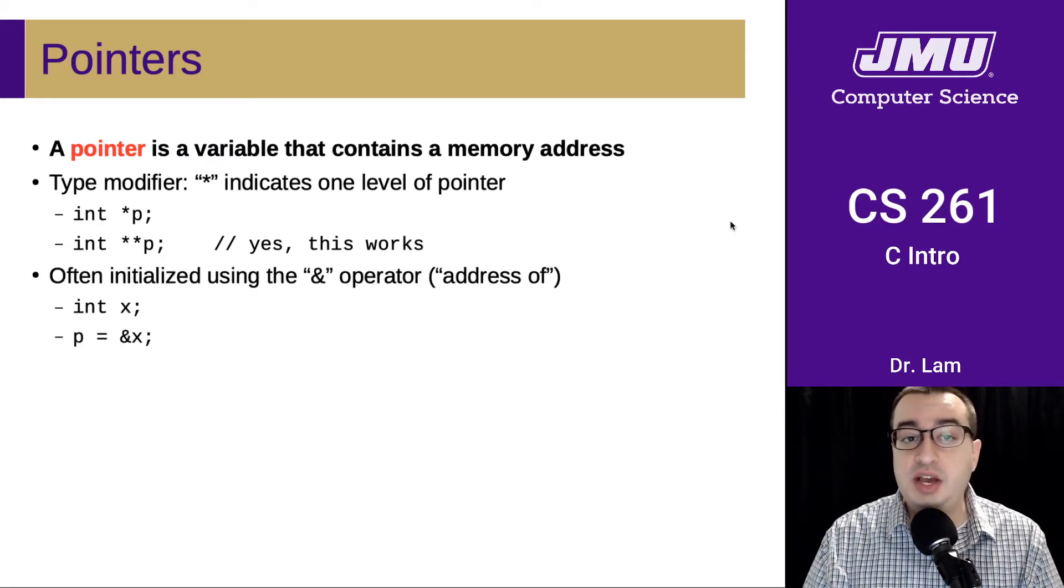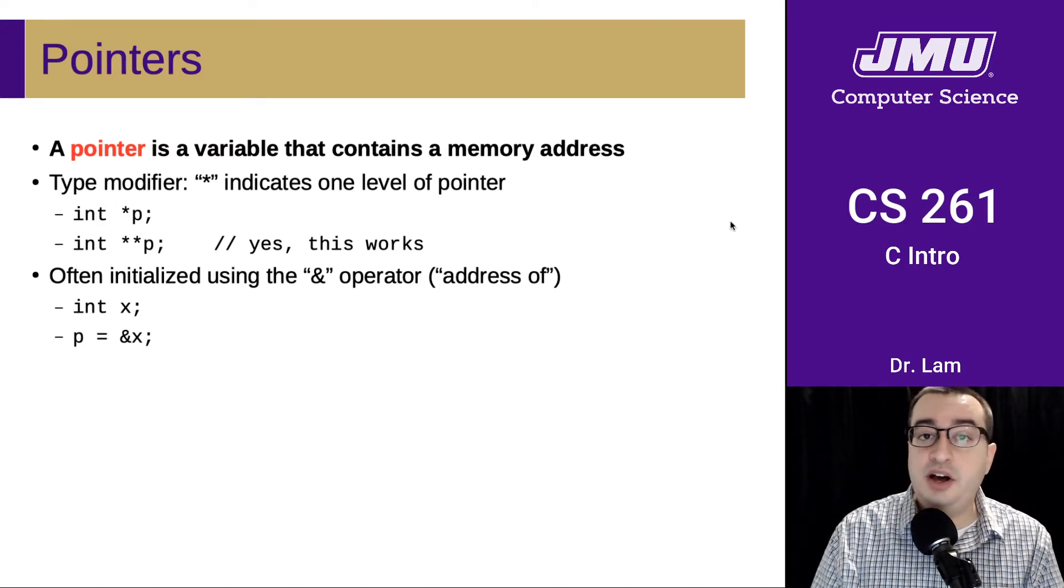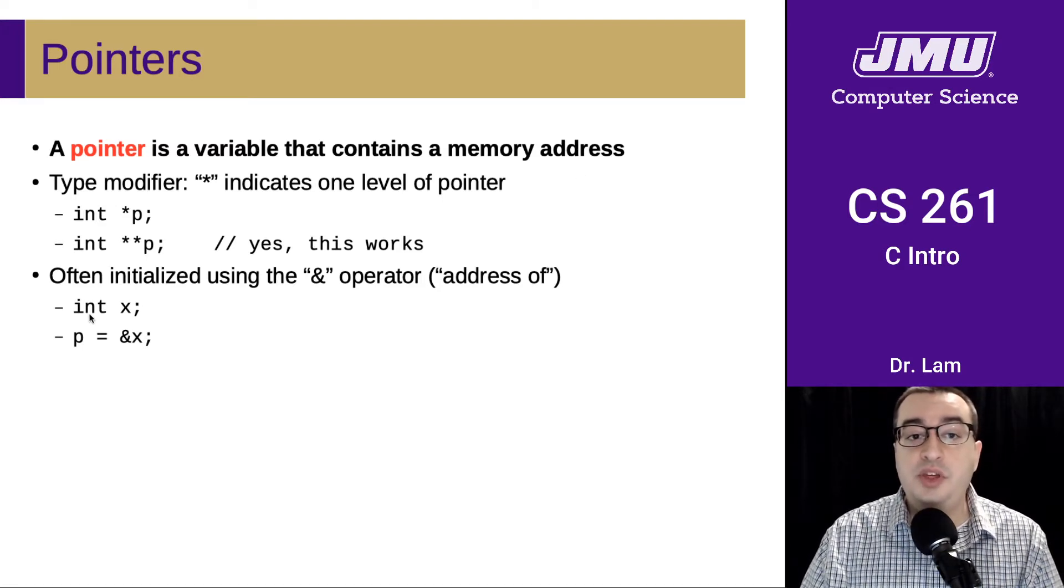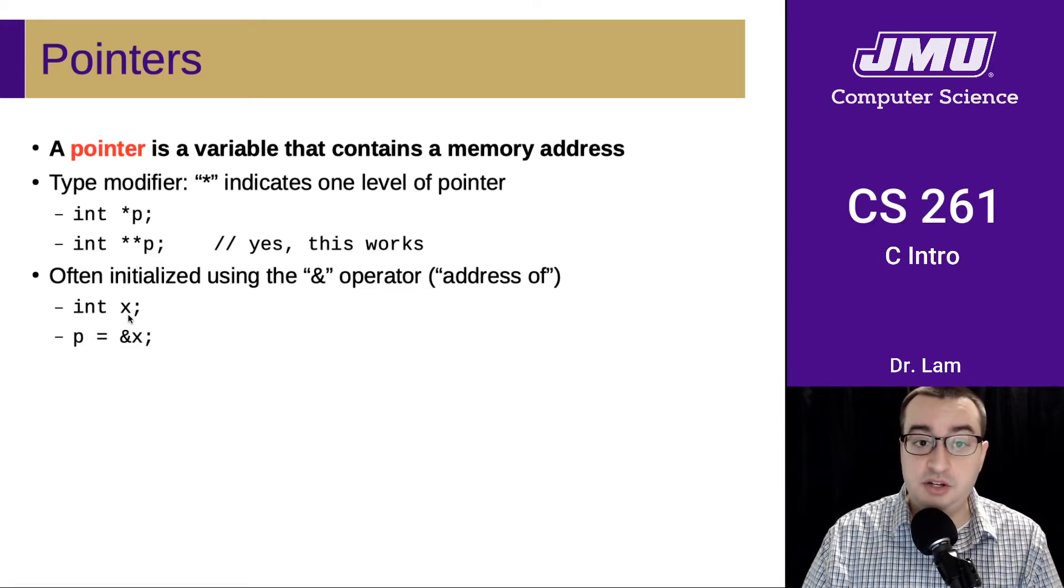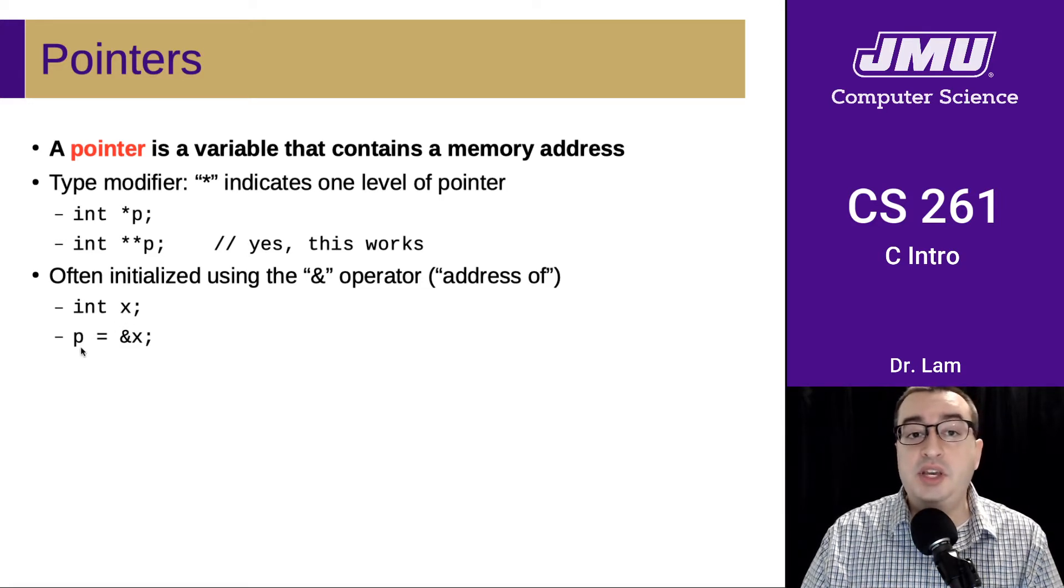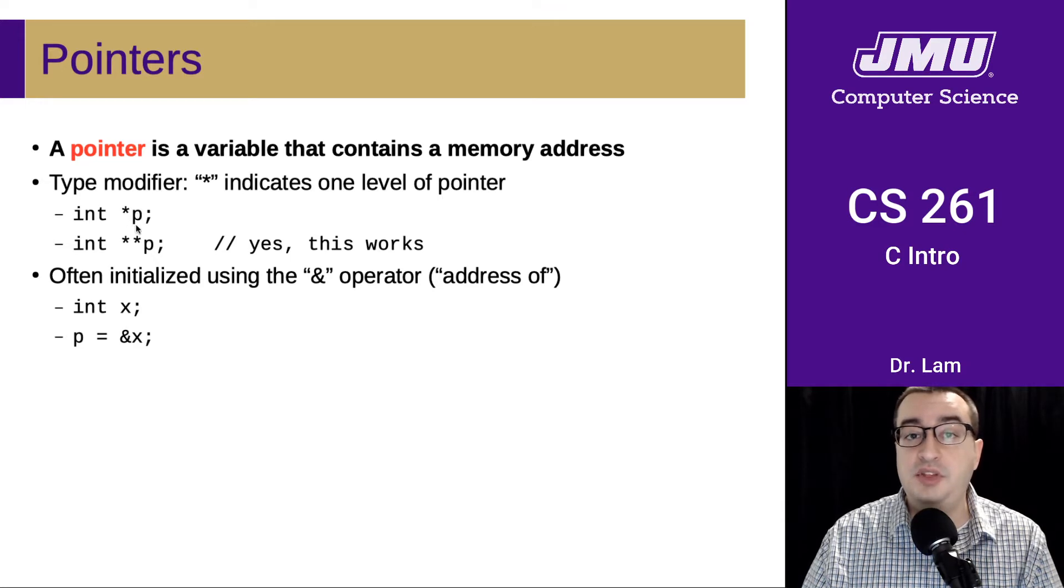We often initialize pointers using the address of operator. So this will declare an integer called X. This is a regular integer. And now we can take our pointer P, which is kind of assumed to be this pointer up here, and we're going to initialize it with the address of X.